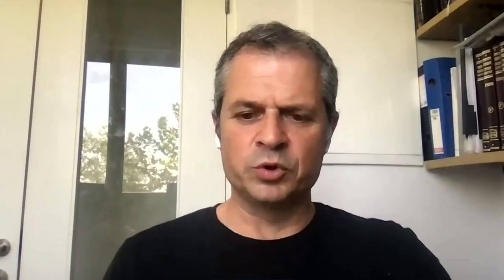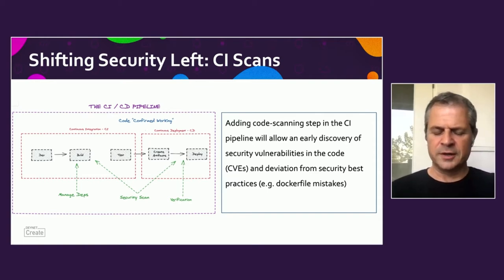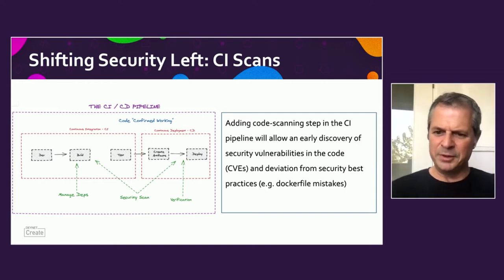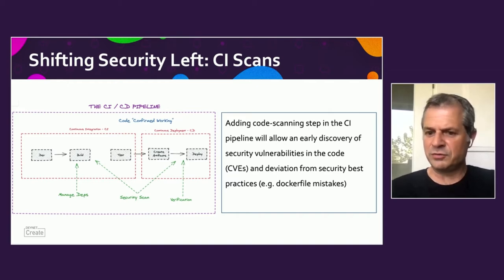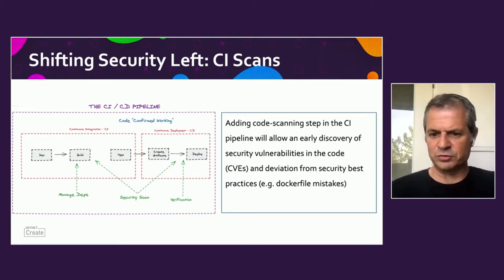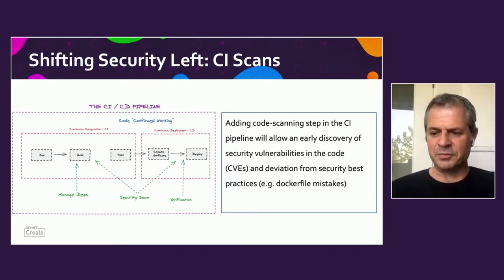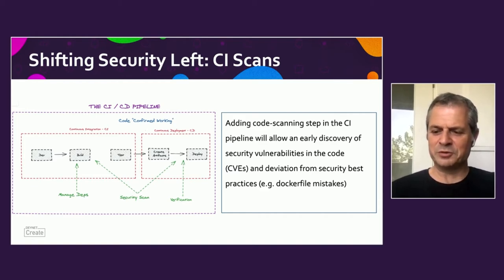But first, let's illustrate the classical CI approach. When we build an image — a container image or Docker image — we add a code scanning step to the build process. This allows us to discover known CVEs or newly discovered CVEs, identify fixed versions that eliminate them, and catch security best practices violations in Dockerfiles that could lead to security pitfalls.